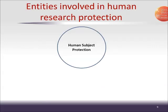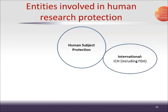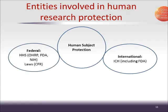What are some of the entities involved in human research protection? There's the International Standards, which is the ICH, the International Conference of Harmonization. GCP guidance and regulations are formed with the FDA and also with other international regulatory bodies. Then we also have federal — the FDA, along with OHRP and the NIH, as well as other parts of HHS, also issue guidance documents regarding human subject protection, with OHRP taking the lead on providing clarification and guidance on the topic.